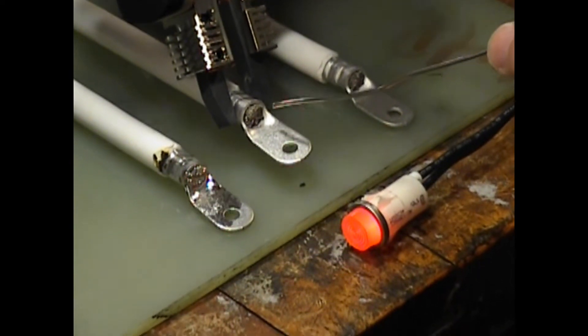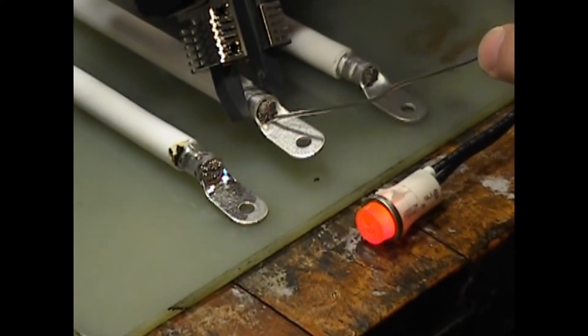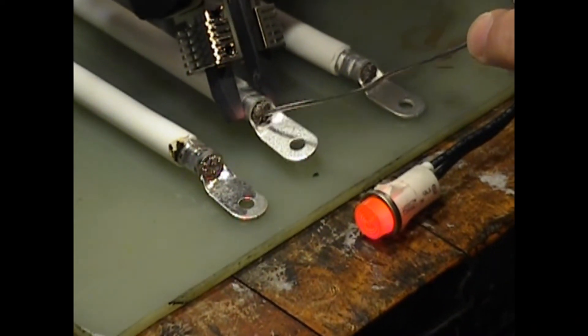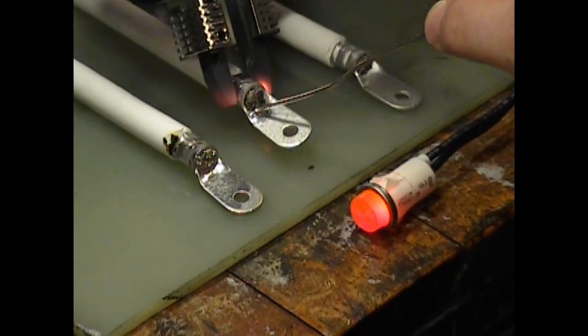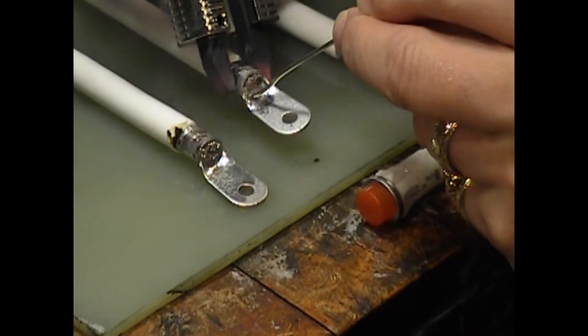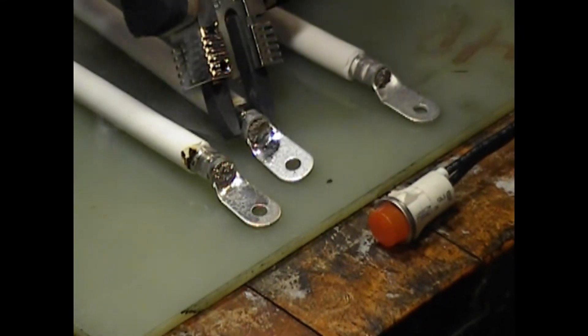The purpose for soldering crimped on terminals is to improve the mechanical connection and the electrical continuity along with creating a hermetic seal to protect the connection against oxidation or contamination caused by humidity or other environmental hazards.